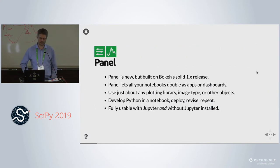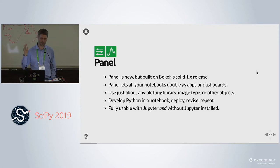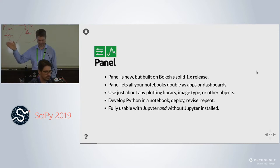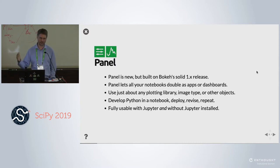Panel is a new package, built on top of Bokeh's 1.x release. It's now up to 1.something, but this is the solid, supported API into the future, so it's a great thing to be building on. Even though it's built on Bokeh, you can use just about any plotting library. It's designed to be the one unifying thing in SciPy. It is not in any way customized for Bokeh plots — it's just anything you want to put together and share with people.